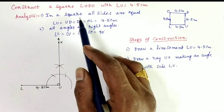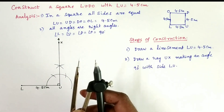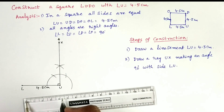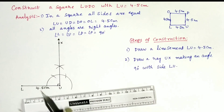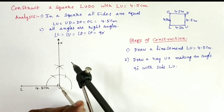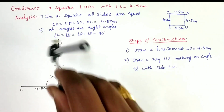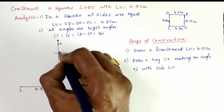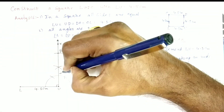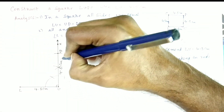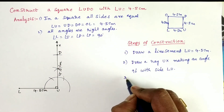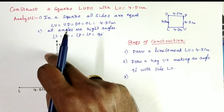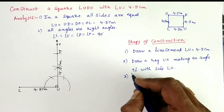Next, UD equals 4.5 cm. Take 4.5 cm with the compass. Step 3: take U as center and 4.5 cm as radius, draw an arc. It cuts the ray UX at point D.